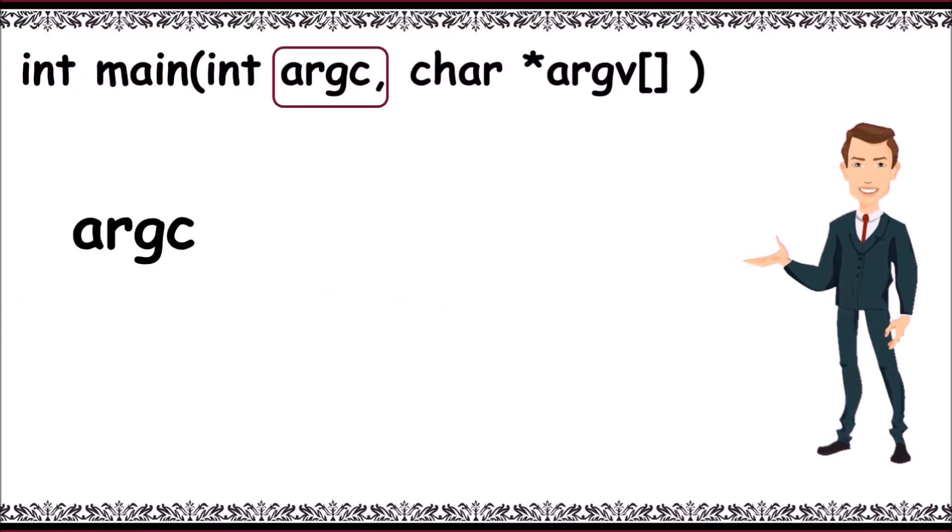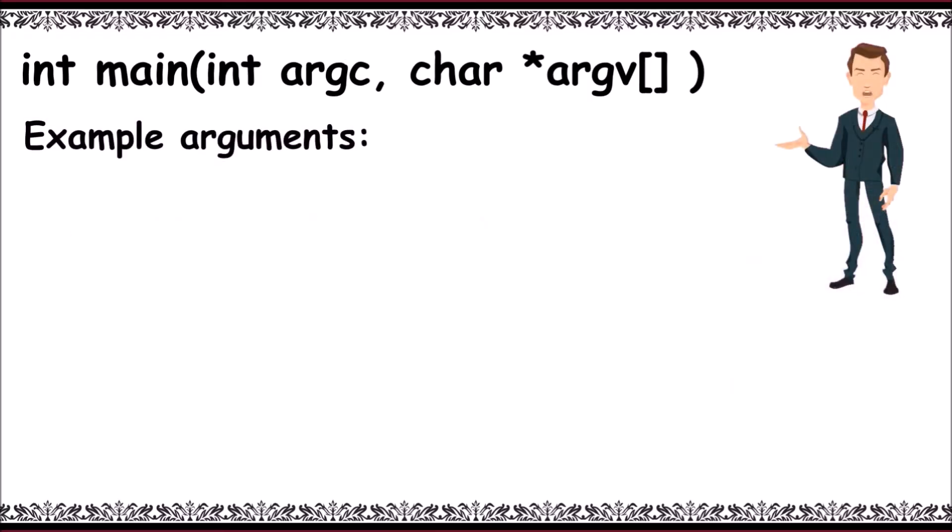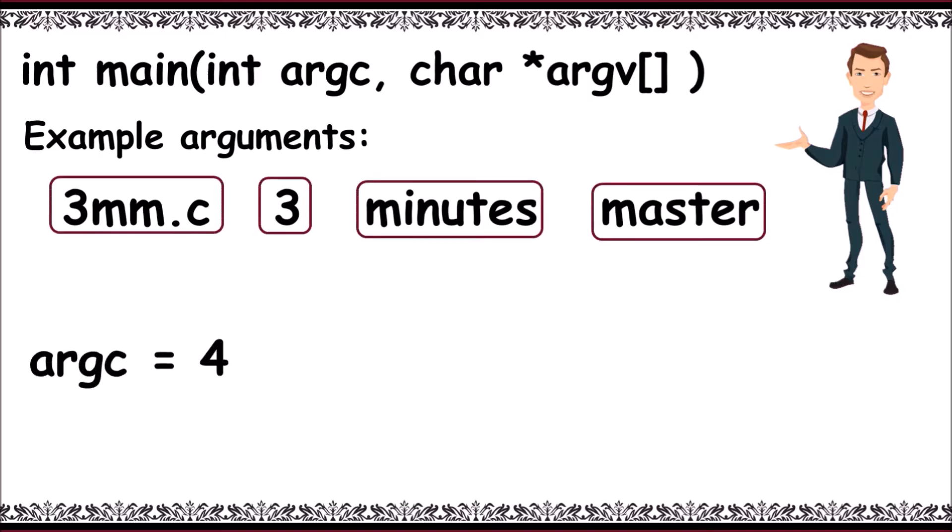Here argc refers to arguments count. argv is an array which contains all the arguments. For example, 3mm.c space 3 space minutes space master. By default, first argument is program name followed with remaining arguments 3 space minutes space master separated with spaces. Here argc is equal to 4 as we have 4 arguments here.